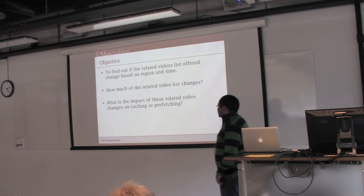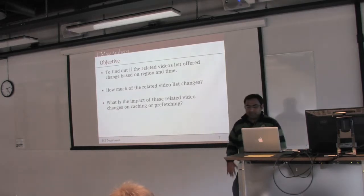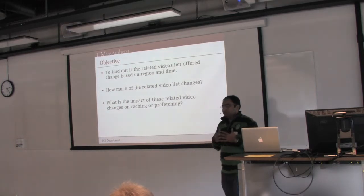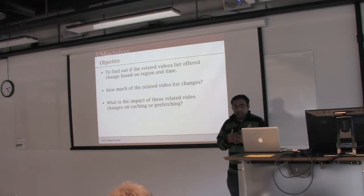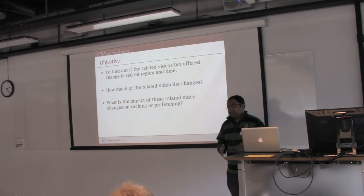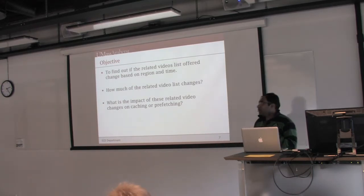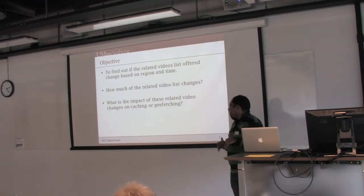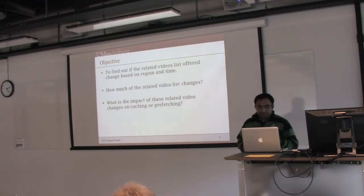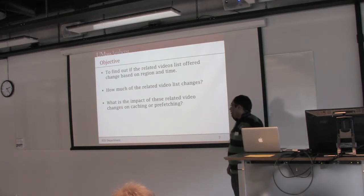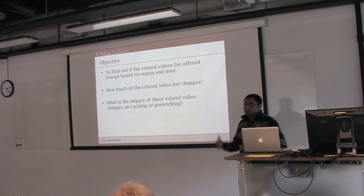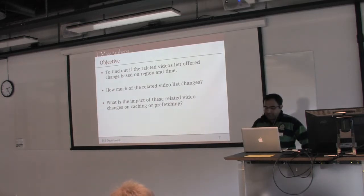The objective of this work is to find out if the related video list offered by YouTube changes based on the region of the request, the time of the request, on a daily basis, or per client. And if the related video list changes, how much of it changes — whether at the top or the bottom. Finally, we examine the impact of these related list changes on the caching and prefetching technique we have shown to be effective.